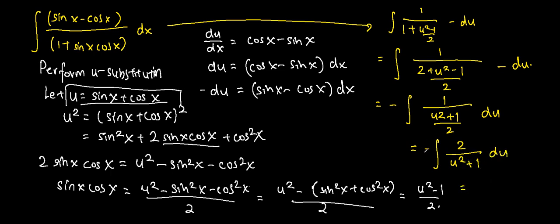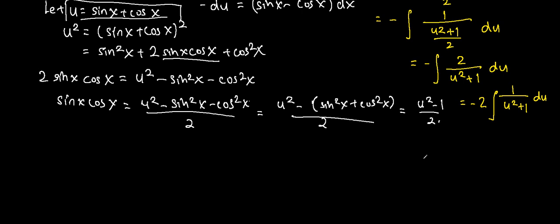We bring the constant 2 out of the integral. The integral of 1 over u squared plus 1 du has been solved in a previous video, which I have linked to this video, so you can check it out.